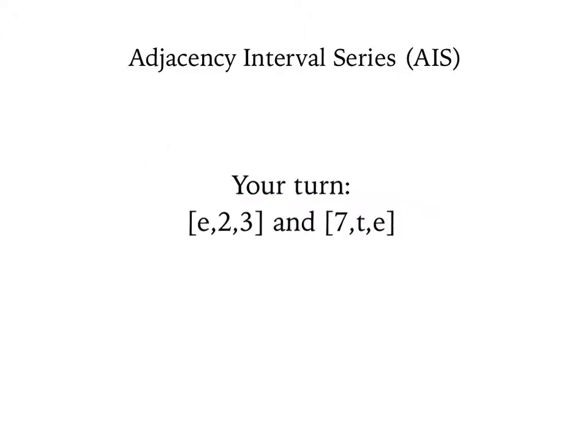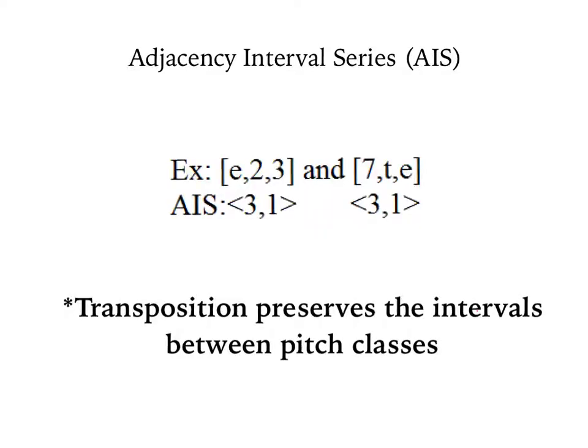Now you try. Find the AIS of these two pitch class sets: 11, 2, 3, 7 and 10, 11. Pause your video and calculate the AIS. The AIS is 3, 1 for both sets, which means they are transpositionally equivalent, and we can use this information to check the work we did in our previous example.